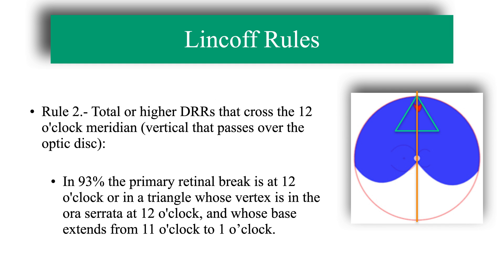The second rule is used in total or superior rhegmatogenous retinal detachments that cross the 12 o'clock meridian, which is the vertical meridian that passes over the optic disc. In these cases, 93% of the time the primary retinal break is at 12 o'clock. If not, it will be found in a triangle whose vertex is located at the ora serrata at 12 o'clock and whose base extends from 11 to 1 o'clock.